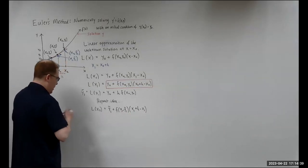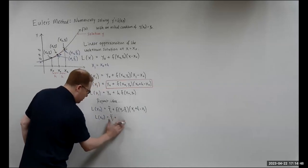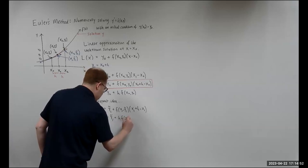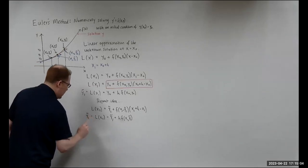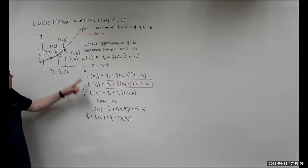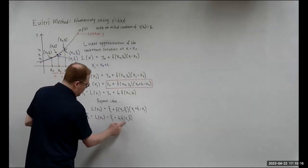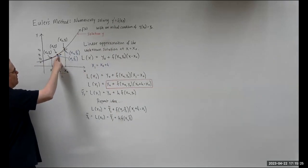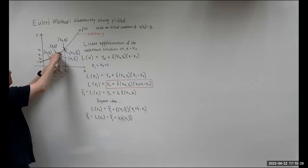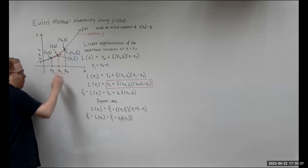This gives us L(x₂) = y₁ tilde + h·f(x₁, y₁ tilde), which equals y₂ tilde. When we evaluate the function at (x₁, y₁ tilde), it gives us an estimate of the slope of the tangent line at that point. They're close enough to use as an estimate — that's the primary basis of how this technique works.